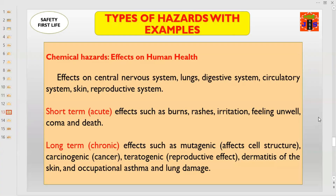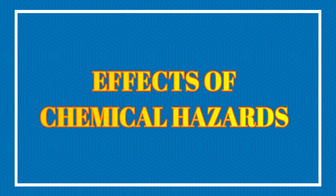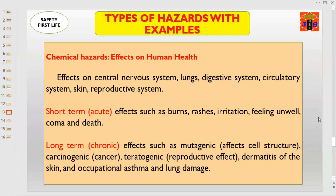Dear friends and fellows, first of all we'll start with chemical hazards. What are the effects of chemical hazards on human health? Chemicals affect the central nervous system, lungs, digestive system, circulatory system, skin, and reproductive system. In this way, you can easily understand chemical hazards are very harmful.